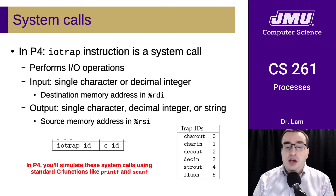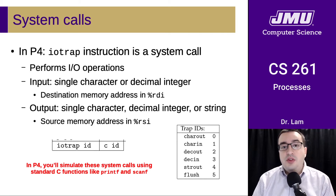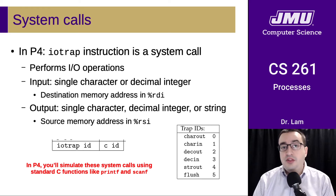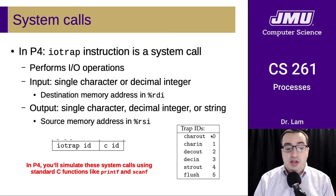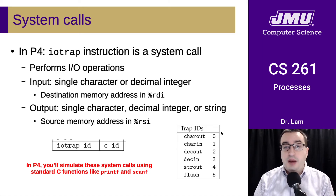It performs I/O operations on characters, integers, and strings. It supports input in the form of a single character or a decimal integer, and it takes one parameter passed in RDI, which is the address of where the data should be read in. The IOTRAP instruction includes an identifier as part of the encoding, and the identifier tells you what kind of operation you're doing.